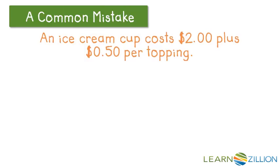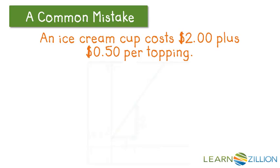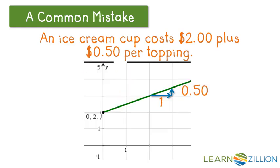A common mistake: when we see a scenario, a common mistake is to switch the numbers that are the slope and the y-intercept. Looking at the picture, we have what was thought to be a y-intercept of 0.5 and a slope of 2. But if we look at the scenario, the ice cream cup costs $2 — that's the initial one-time cost. Every time you add a topping, it's 50 cents. So we have those numbers backwards; it doesn't fit the description. We should have a y-intercept of 2, and every time we add a topping the graph increases by 50 cents. That fits more with the description, and that's one way to check that you're on the right track.